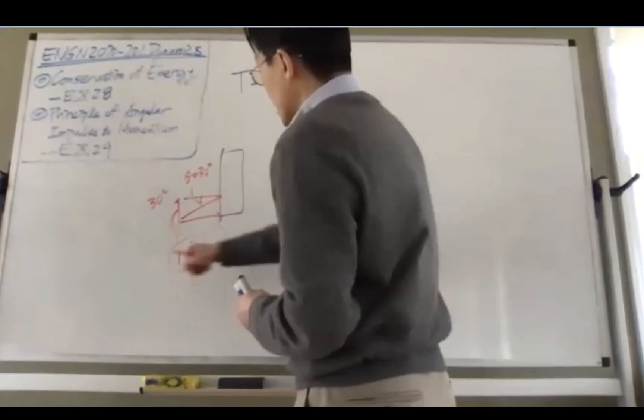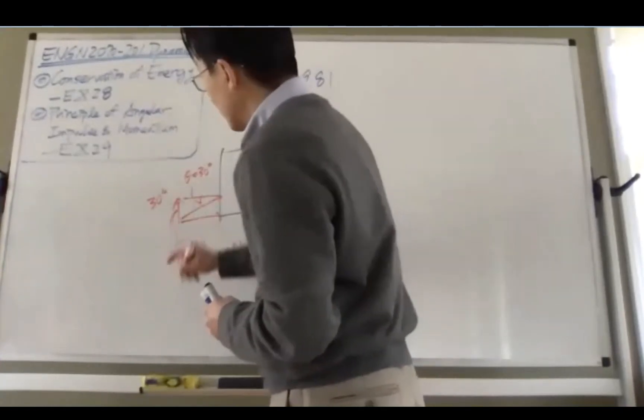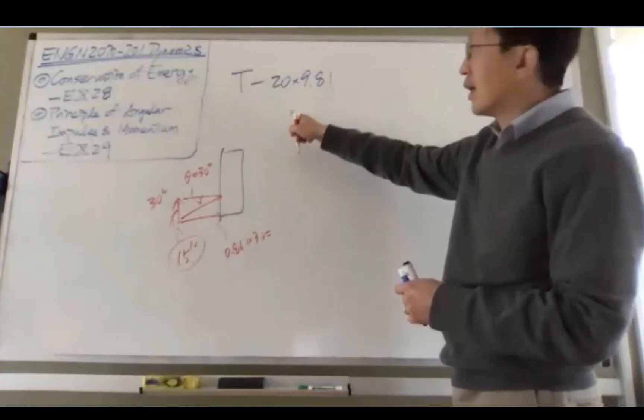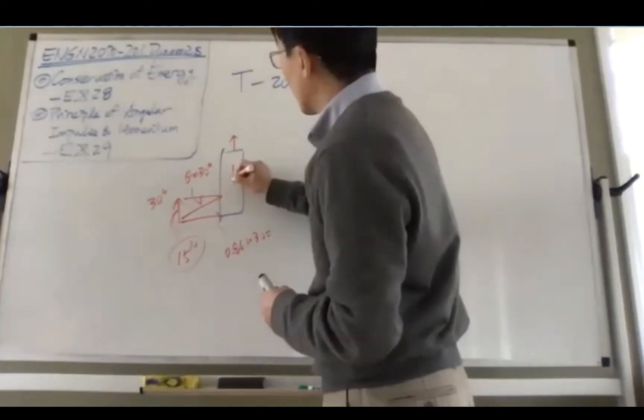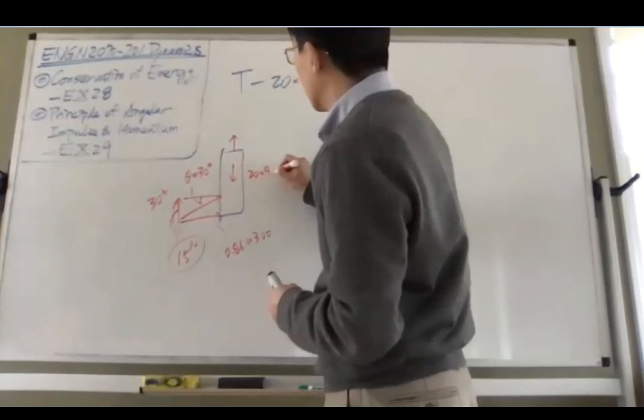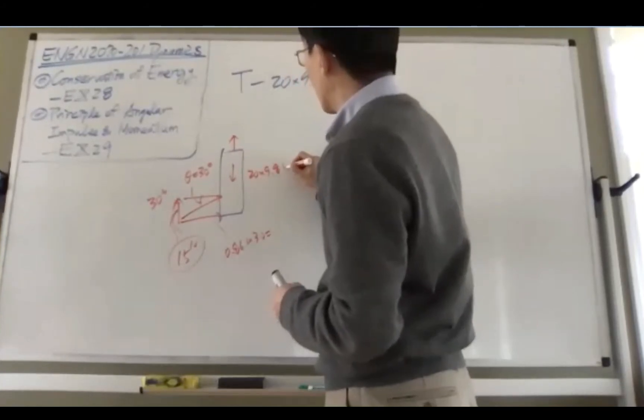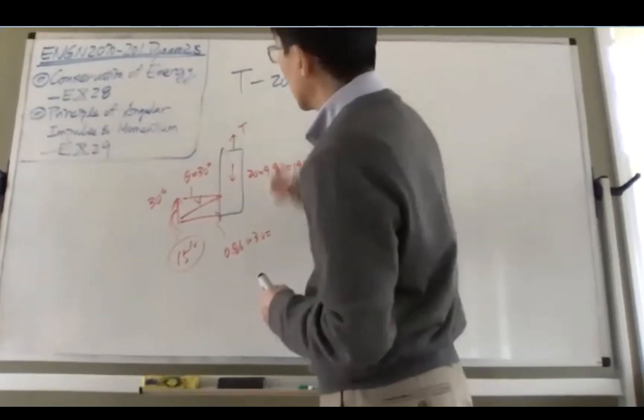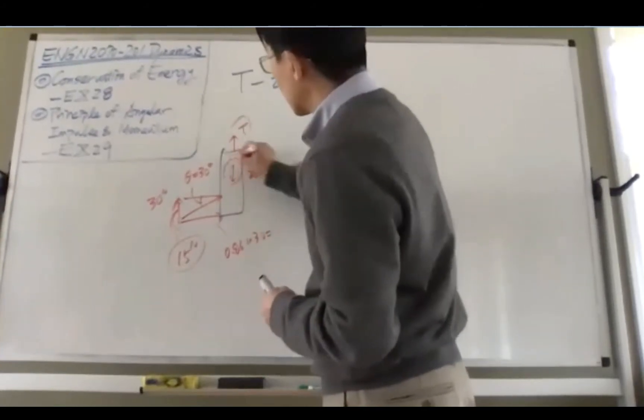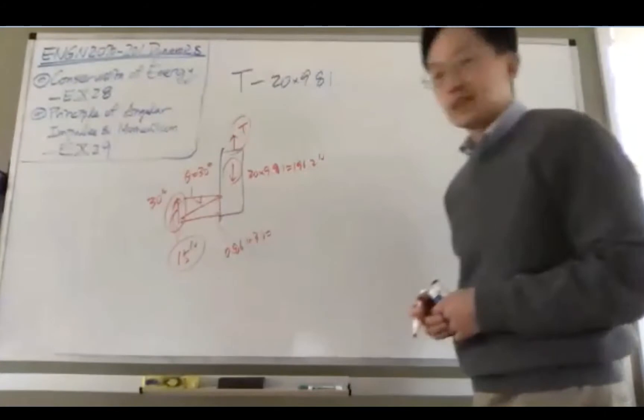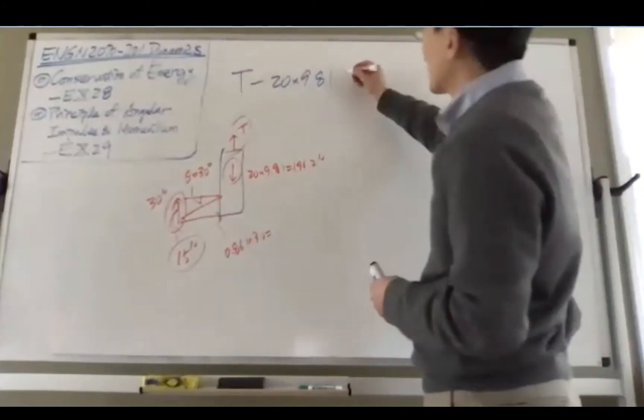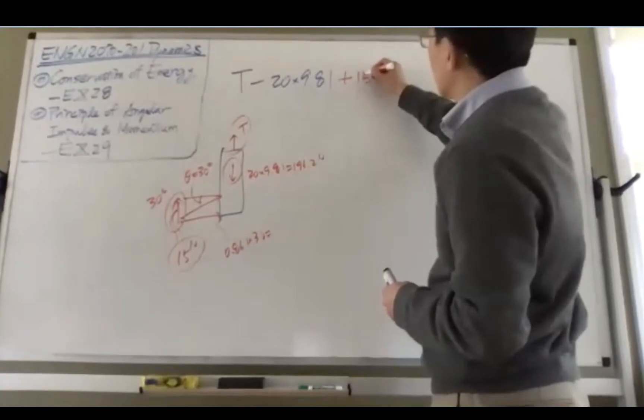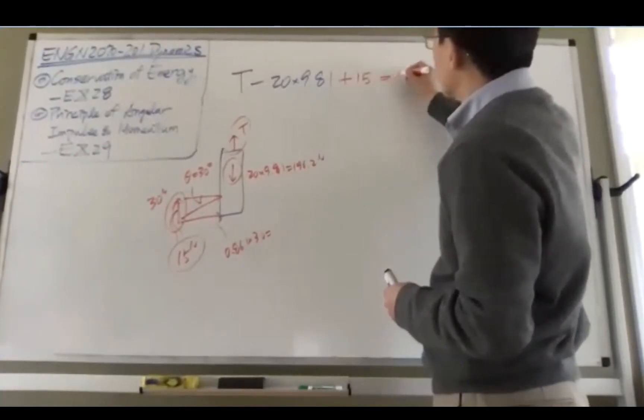Here the vertical component is 15, that means on the left hand side of your equation you have the tension force, you have the weight 20 times 9.81 which is 196.2 newtons. And here you have this force, this weight, and also this force that you have to consider. So on the left hand side you have to add another thing, plus 15 to be zero.